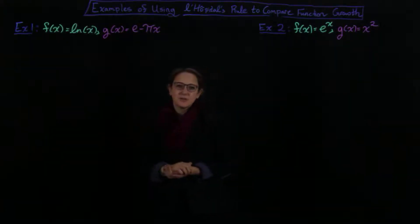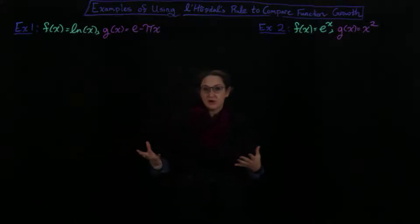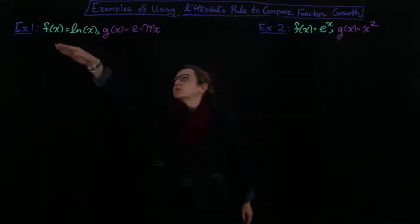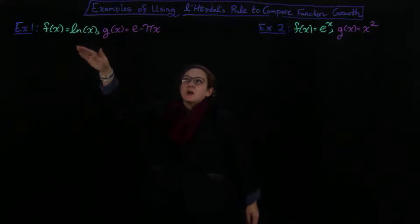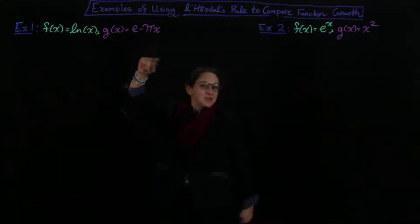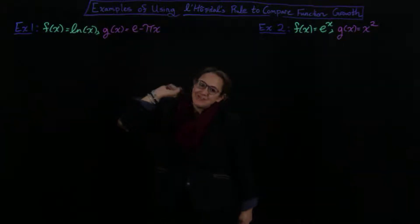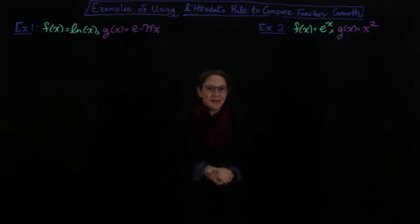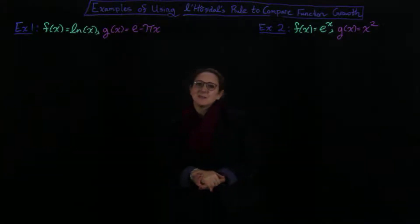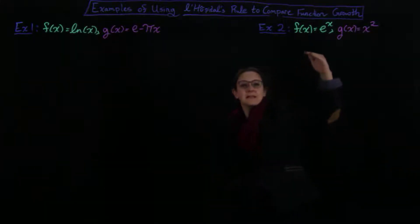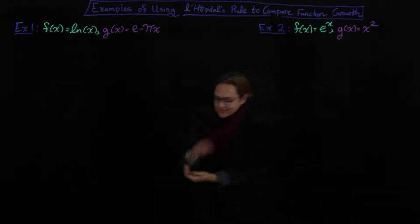Welcome. In this lecture we're going to go through two examples of using L'Hôpital's Rule to compare the growth rates of two functions. The first one will be the natural log of x compared with e minus pi x, which is actually a polynomial — pi and e are still constants. Then in the other example we're going to compare e to the x with x squared. Let's get started.